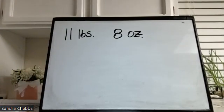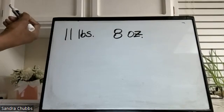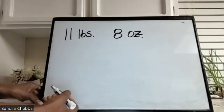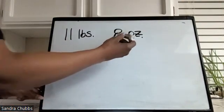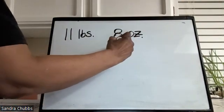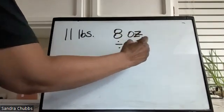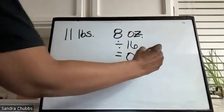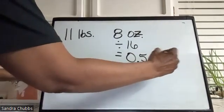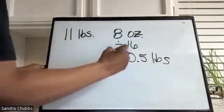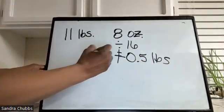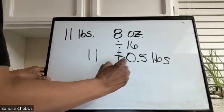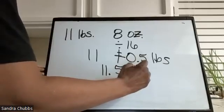Here's our next one: 11 pounds and 8 ounces. Step one is to convert the ounces to pounds first. So we take 8, we divide it by 16, and that gives us 0.5 pounds. We add that to the 11 pounds, and that would give us 11.5 pounds.